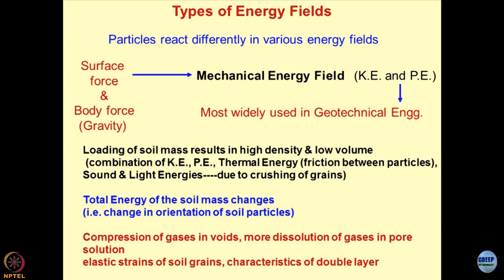When we talk about mechanical attributes, we use the concepts of kinetic energy or potential energy. Most of the systems in conventional geomechanics — like consolidation — involve loading a soil sample from the top, where static energy or potential energy is converted into kinetic energy. The sample consolidates; the particles are traversing and moving toward each other. The initial particle was in a static state; you applied pressure, the static stress got converted into kinetic energy, and water starts coming out due to pore pressure generation — a kinetic phenomenon.